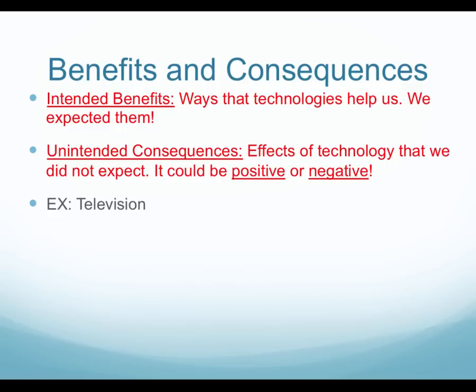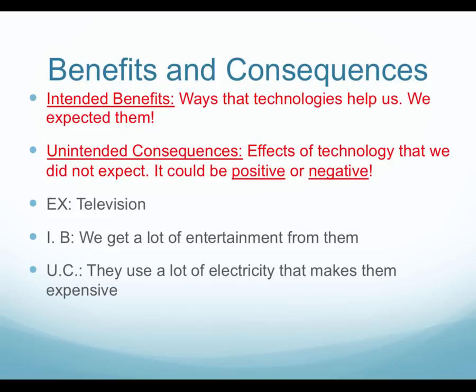Let's take TV for example. An intended benefit — what was TV invented for? It was invented to entertain people. That entertainment is what TV was supposed to do, so that's the intended benefit. Now the unintended consequences of TV could be that it uses a lot of electricity and can get expensive. It could also lead to childhood obesity because a lot of kids are watching so much TV. All of those things were not expected to happen when TV was invented, but they did.